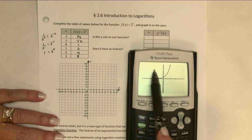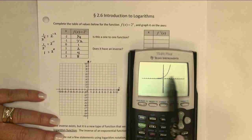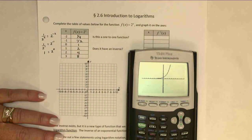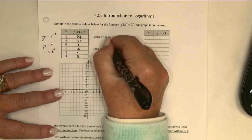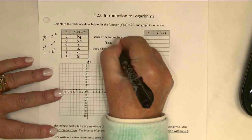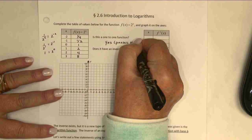If I put a horizontal line anywhere across this graph, it's only ever going to hit the graph in one point at a time. So yes, this is one-to-one.